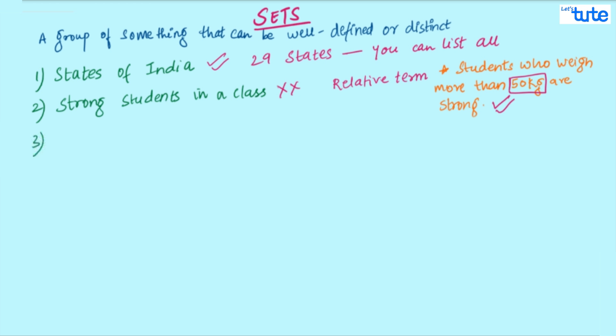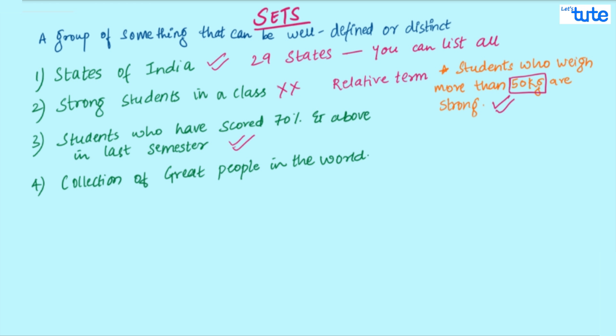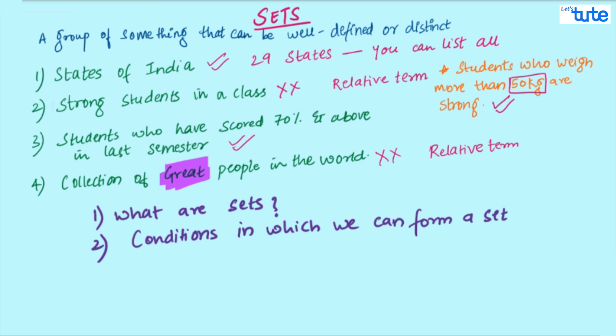Let's see the next one. Students who have scored 70% and above in the last semester? Yes. You can form a set of this. Collection of great people in the world. Again, great is a relative term and we cannot form a set of this. So, I hope by now you know what are sets and in which conditions we can form a set and cannot form a set.